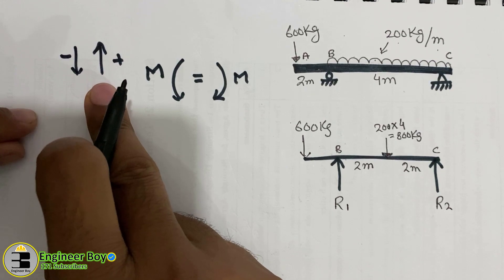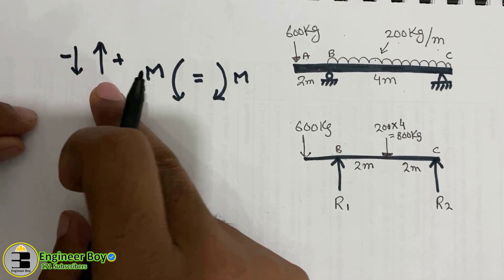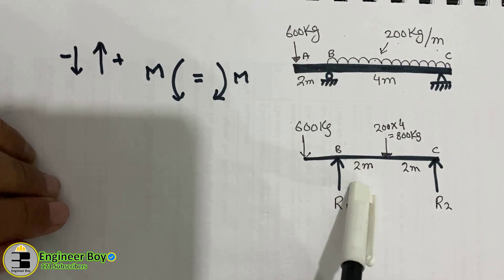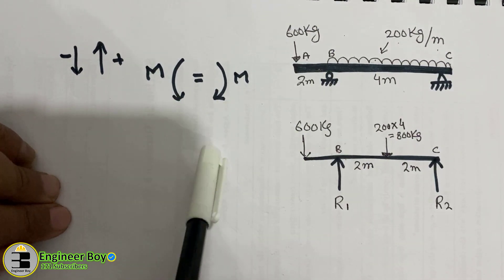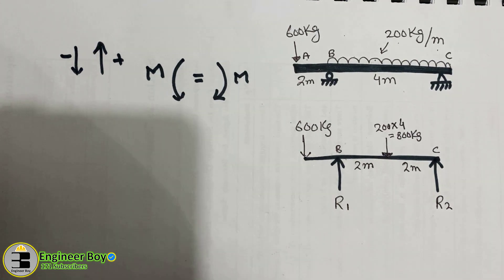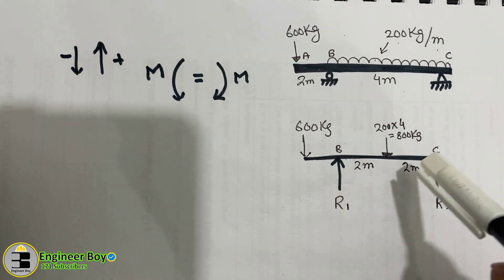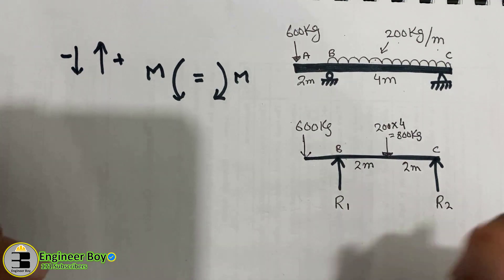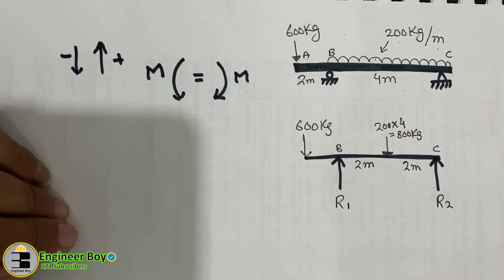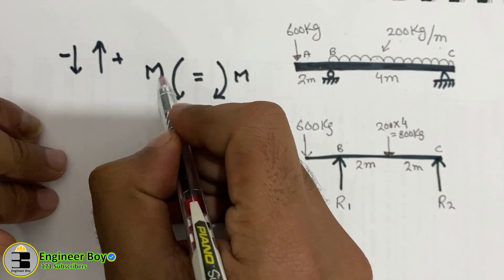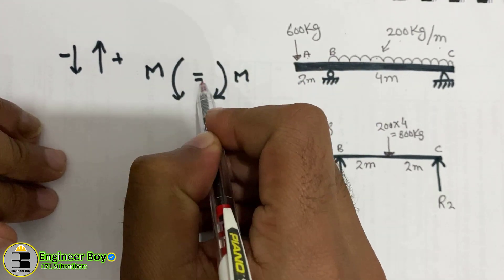For equilibrium: the summation of forces in the vertical direction must be zero, the summation of forces in the horizontal direction must be zero, and the summation of moments at any point must be zero. We use these to find R1 and R2.